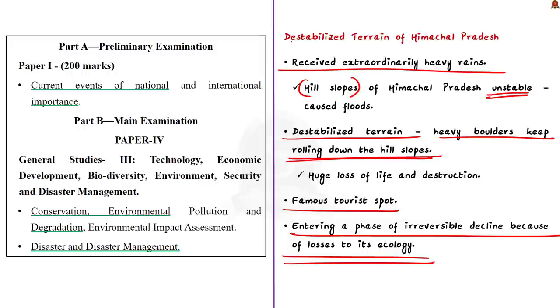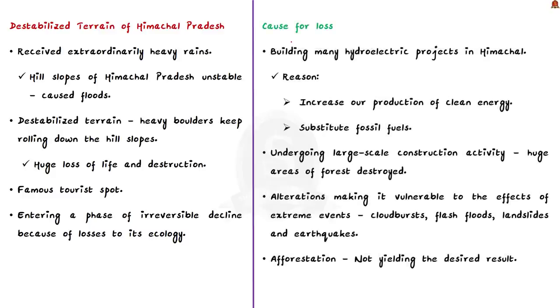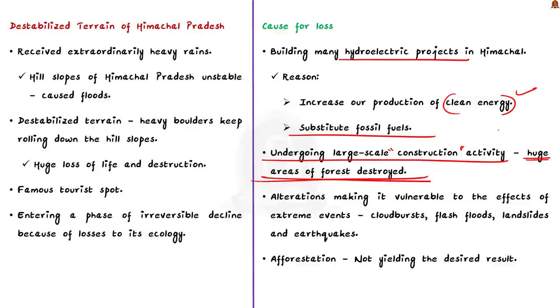Why is Himachal losing its pristine ecology? Our government is building many big hydroelectric projects in Himachal to increase production of clean energy. The green power generated from these hydroelectric projects can substitute fossil fuels. Because of these hydroelectric projects, the state is undergoing large-scale construction activity and these construction activities have destroyed huge areas of forests and that is why the ecology of the state is altered. Because of these alterations, Himachal is now vulnerable to effects of extreme events such as cloud bursts, flash floods, landslides and earthquakes. Since the ecology is destructed, the region is now more prone to landslides.